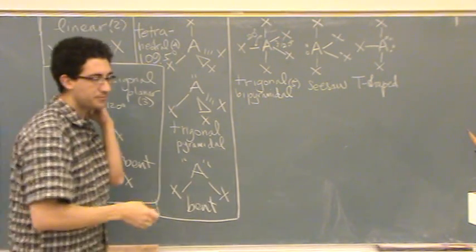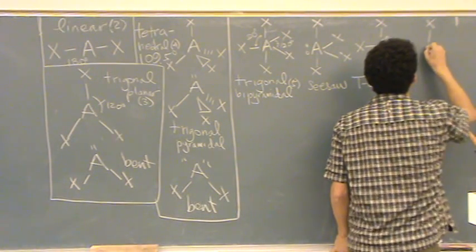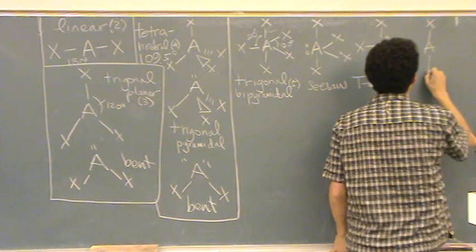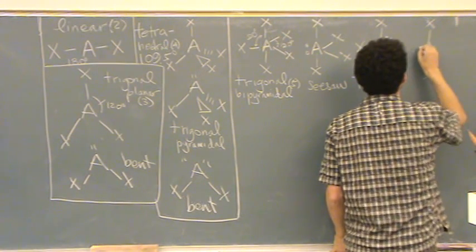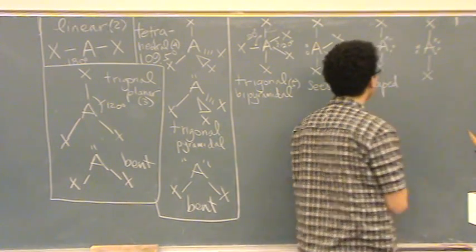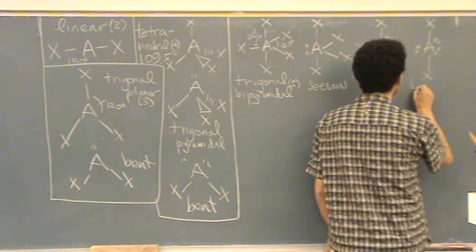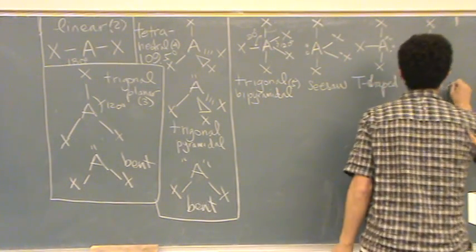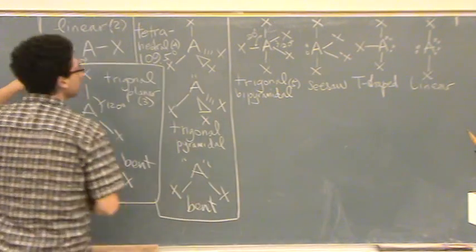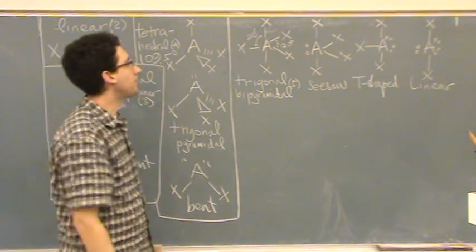Finally, you can take three off, taking all those x's off in the middle. And what do you think that shape is? Just linear. And hopefully it looks linear. It's different than the linear you saw before with two groups. That has five groups, but still linear. Let me put in the bond angles.